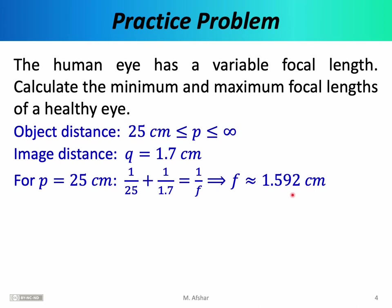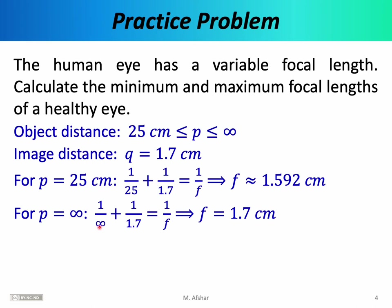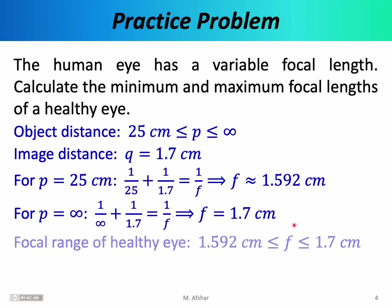On the other hand, if you're looking at something really far, like a faraway mountain range or the moon, we can essentially say the distance is infinity. The moon isn't literally infinitely far away, but compared to the dimensions of the human eye, anything more than a kilometer is effectively infinite. Since 1/infinity equals zero, the focal length in that case is 1.7 centimeters. So a healthy human eye needs to adjust its focal length from 1.592 centimeters to 1.7 centimeters — a range of only about 1 millimeter, yet sufficient to see from 25 centimeters all the way to infinity.